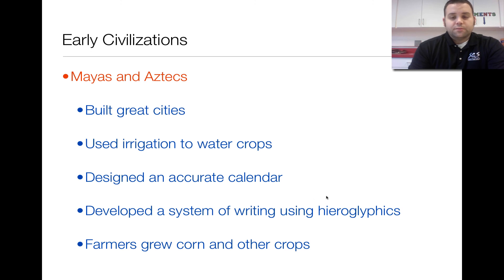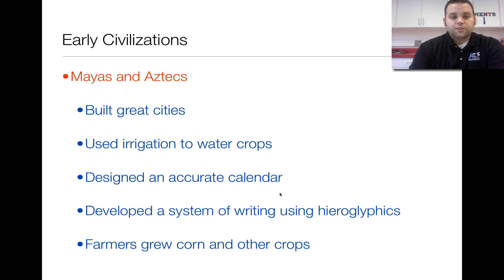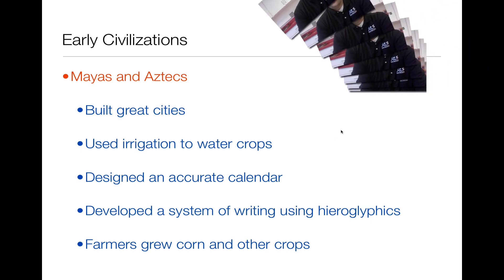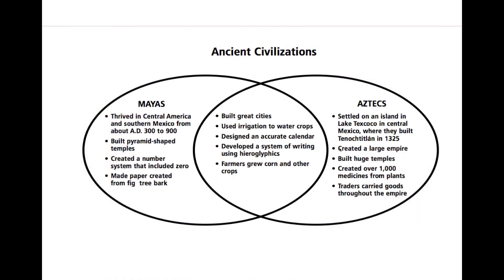They also developed a system of writing using hieroglyphics, where a hieroglyphic is a picture that represents a word or a phrase. And they were both farmers who grew crops, including corn or maize. So these are the notes for the lesson — just some basic information. We'll get more into it in class when we do our activities, but your notes should look like this.